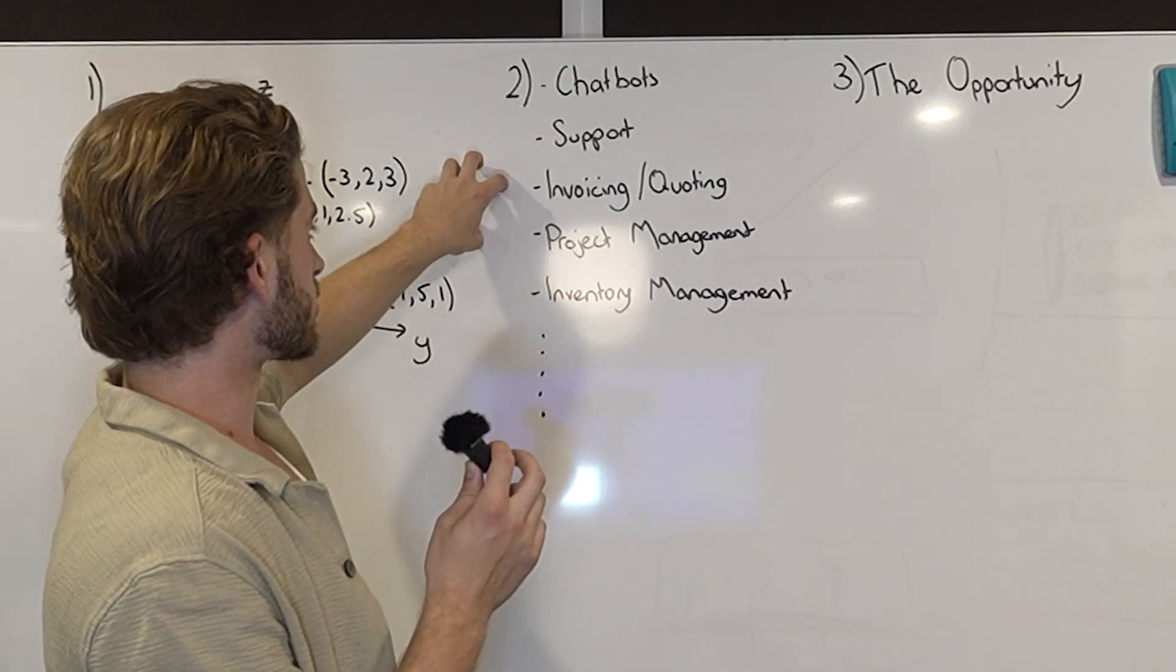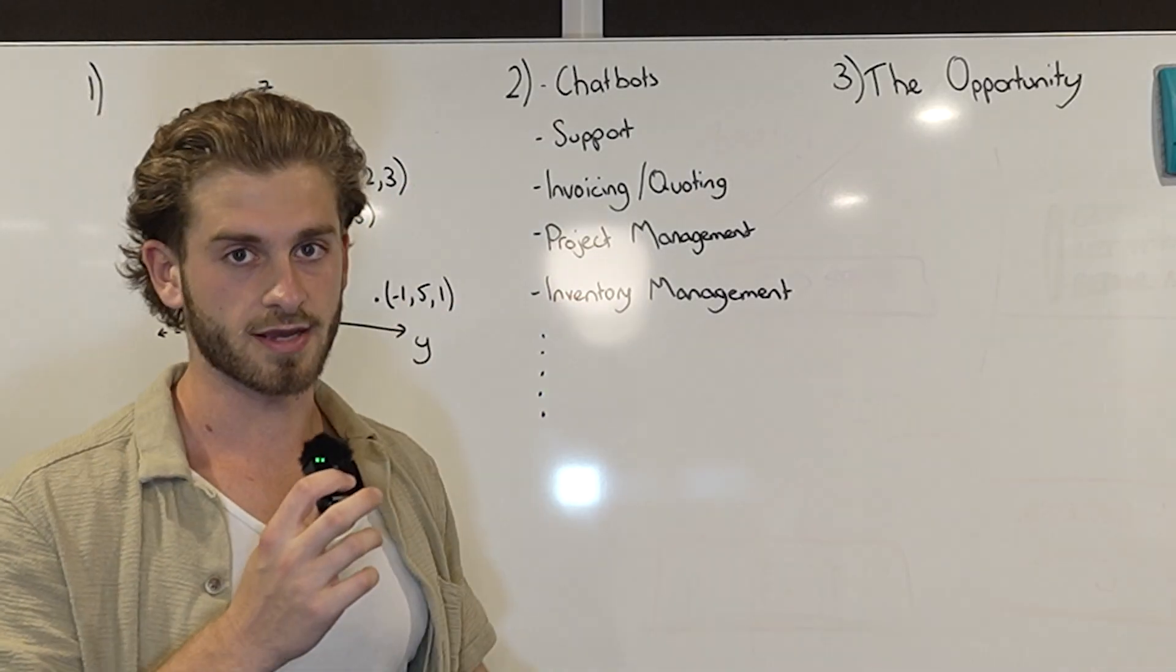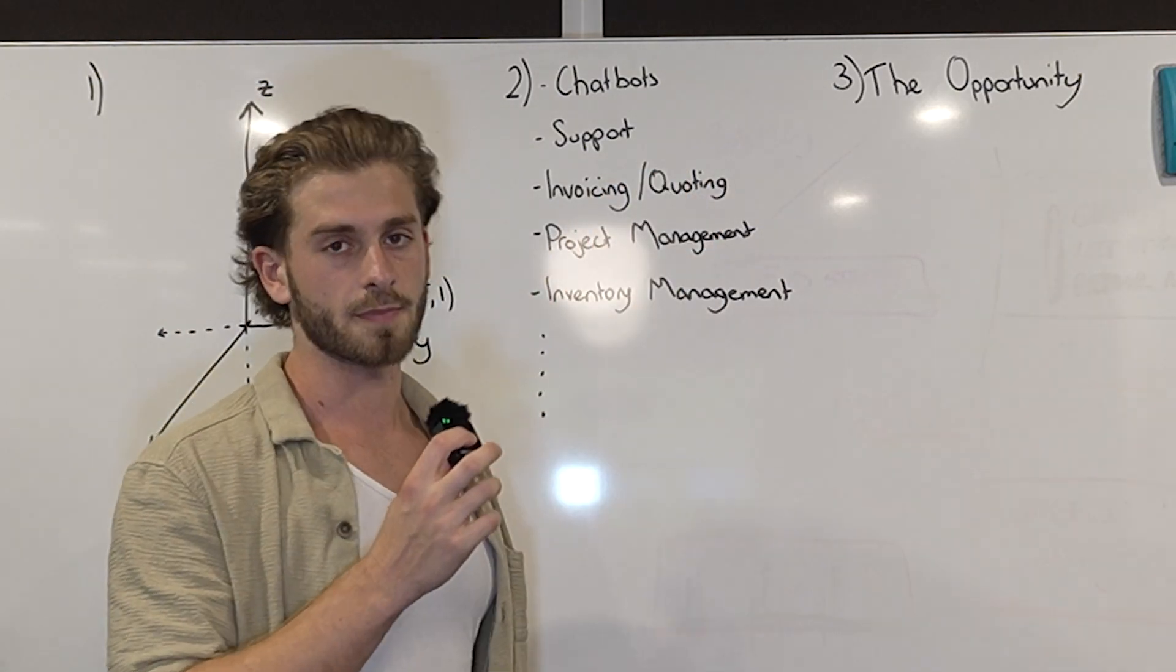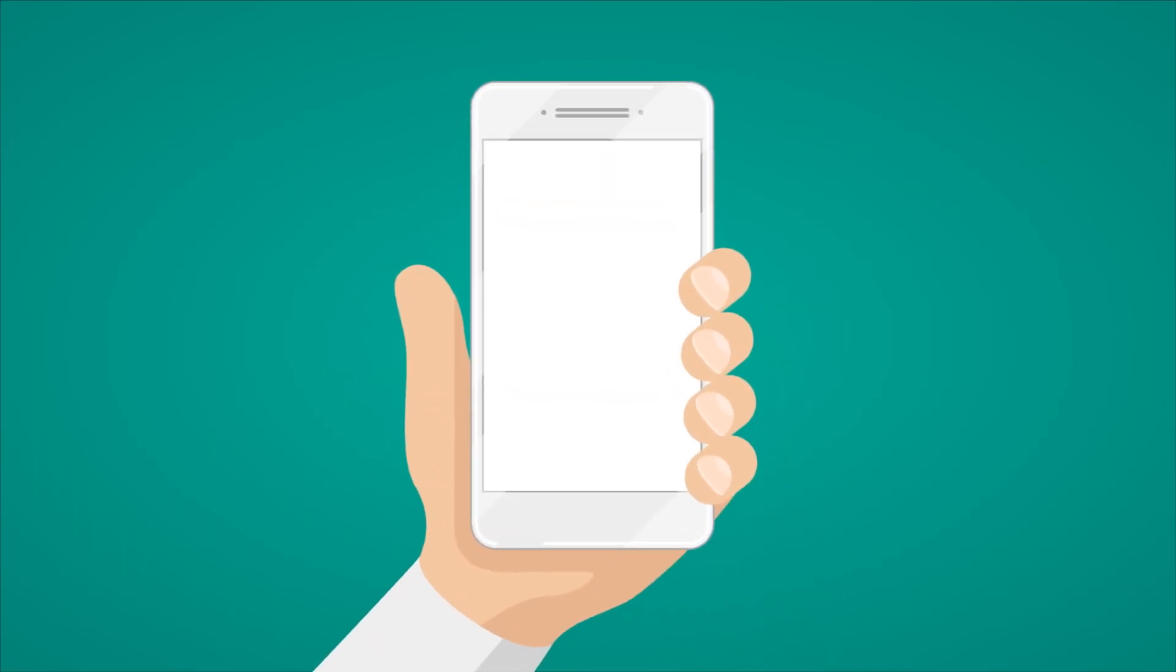When you talk to ChatGPT normally it's trained on data and you can train an assistant and say, hey look this is my company, provide responses that are specific to my company. But that's not as accurate as actually just restricting it to a vector database or a knowledge base and just using that.